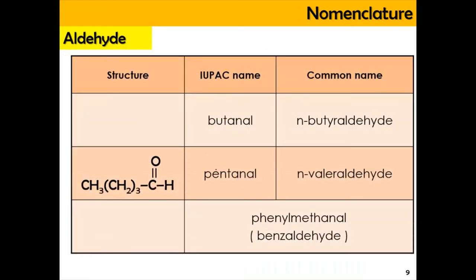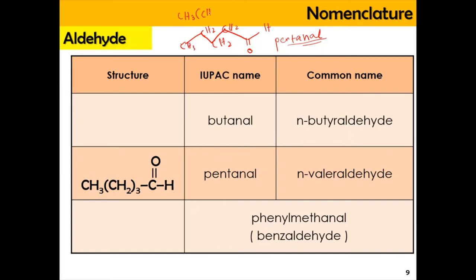For pentanal, the aldehyde should be at the last carbon in the five-carbon chain. They sometimes write it as (CH2)3 because it refers to CH2, CH2, CH2 — repeating three times — followed by CH3. Same structure applies to butanal, which has four carbons with the aldehyde at the end.